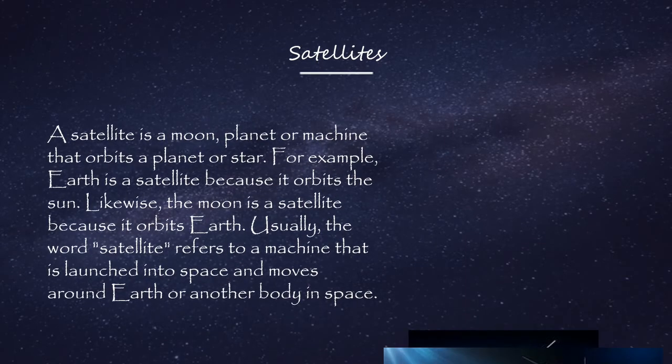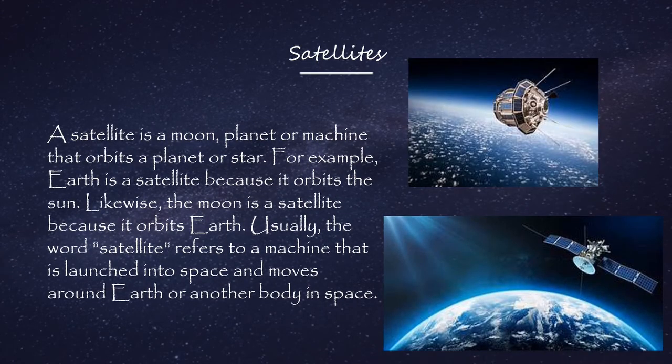Satellites. A satellite is a moon, planet, or machine that orbits a planet or star. For example, Earth is a satellite because it orbits the Sun. Likewise, the Moon is a satellite because it orbits the Earth. Usually, the word satellite refers to a machine that is launched into space and moves around the Earth or another body in space.